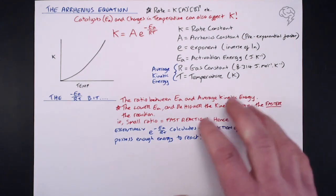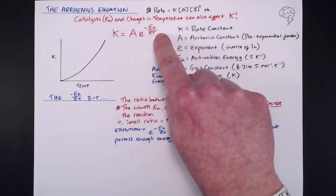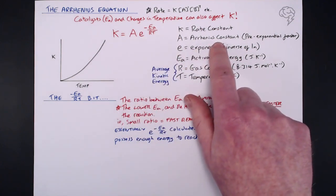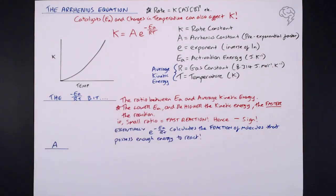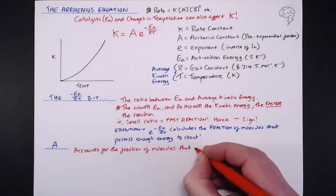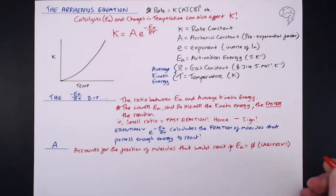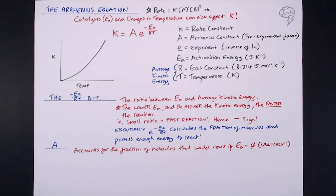You won't have to explain that in an exam — this just gives you an idea of what it's all about to make it look less scary. So what about the Arrhenius constant A, the pre-exponential factor? That accounts for the fraction of molecules that would react if our activation energy was zero. This is a highly unlikely scenario, but we need to include it. Between the Arrhenius constant and the exponential Ea/RT part, we account for both: molecules that would react if activation energy was zero, and the fraction of molecules that actually have enough energy to react — and from these we get our rate constant K.